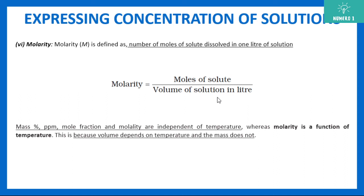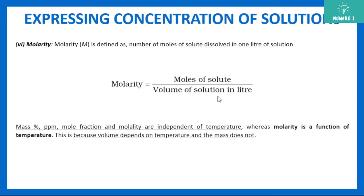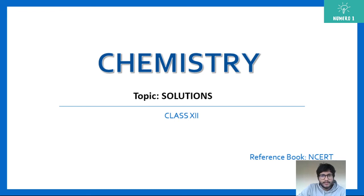The next unit is molality, denoted by small m. It is the number of moles of solute per kilogram of solvent — moles of solute divided by mass of solvent in kilograms. Note carefully: in molarity it was the entire solution (solute + solvent), whereas in molality it is only the solvent. These are all the various units of concentration used to express the amount of solute present in the solvent. Thanks a lot, guys.